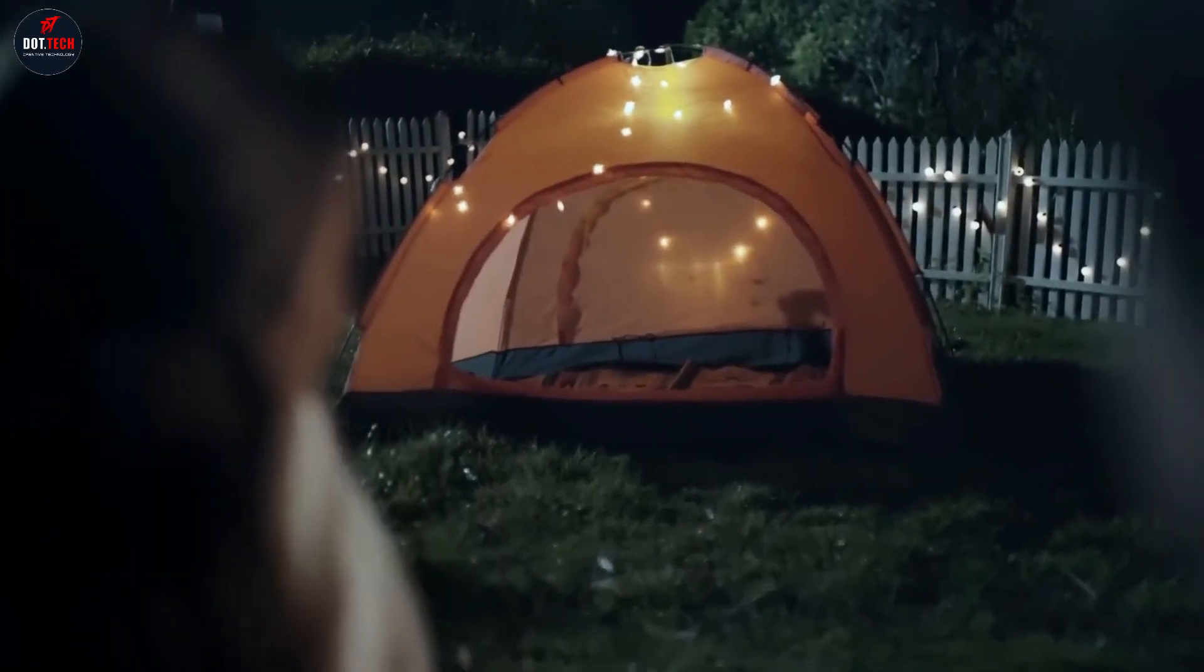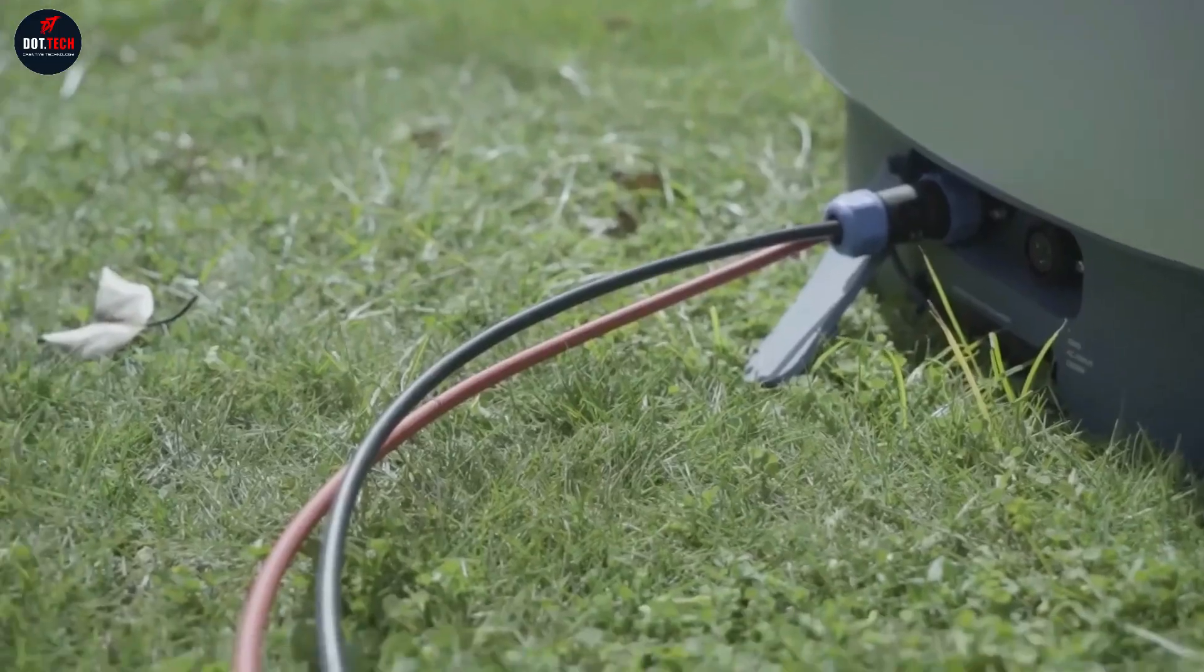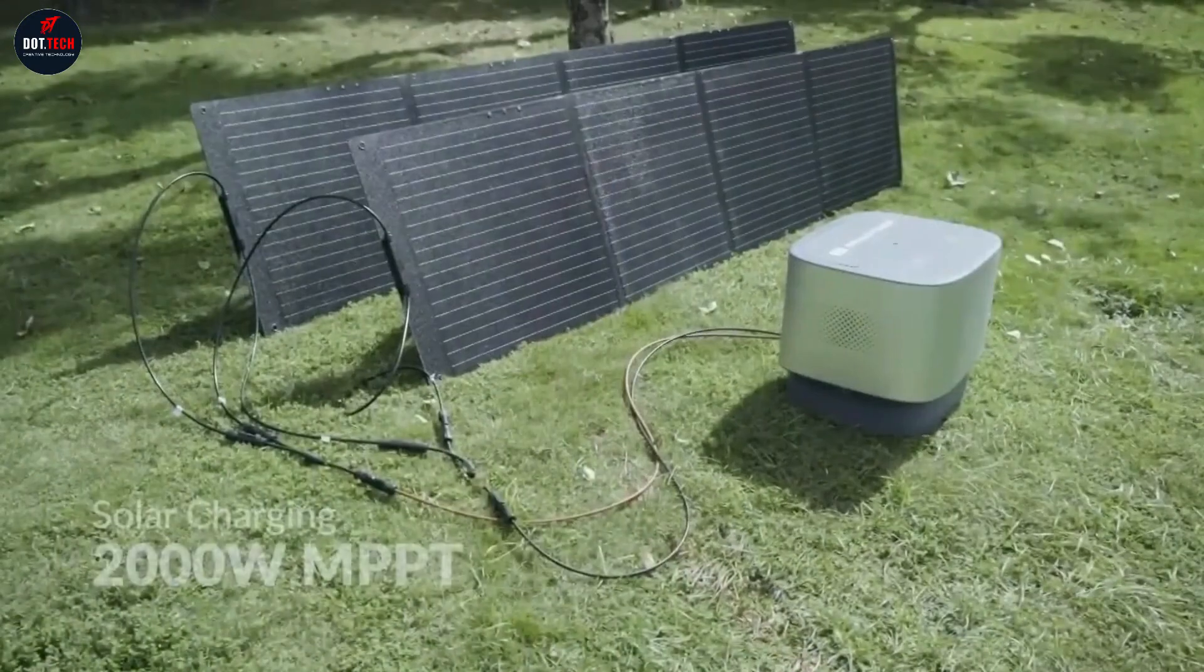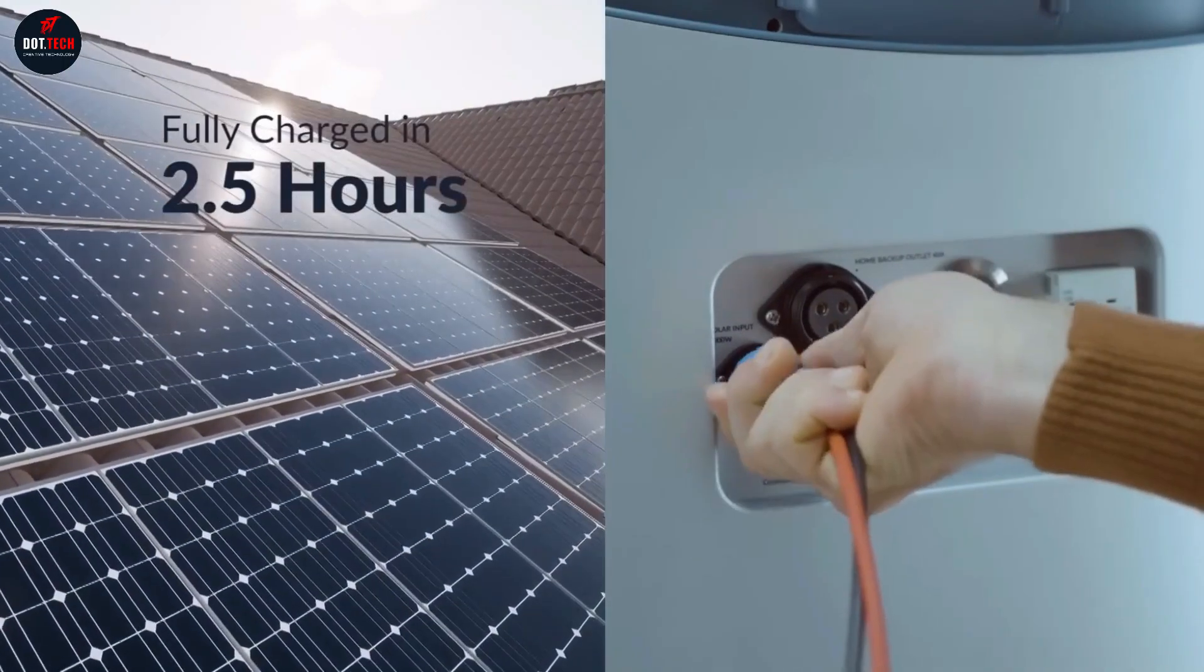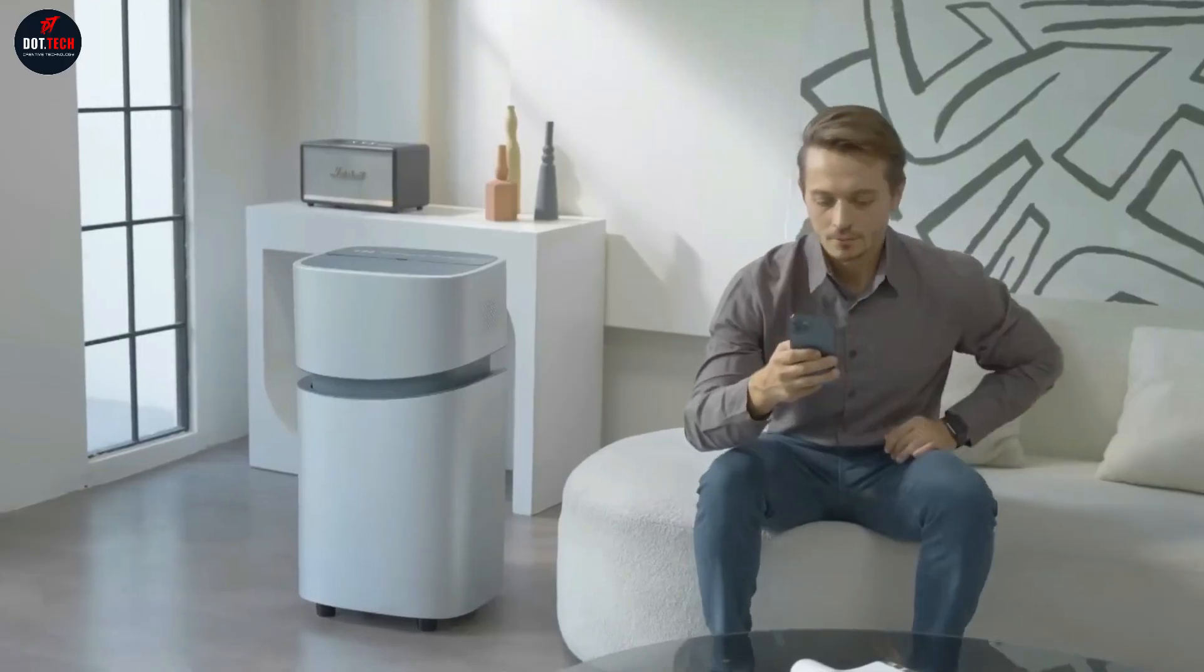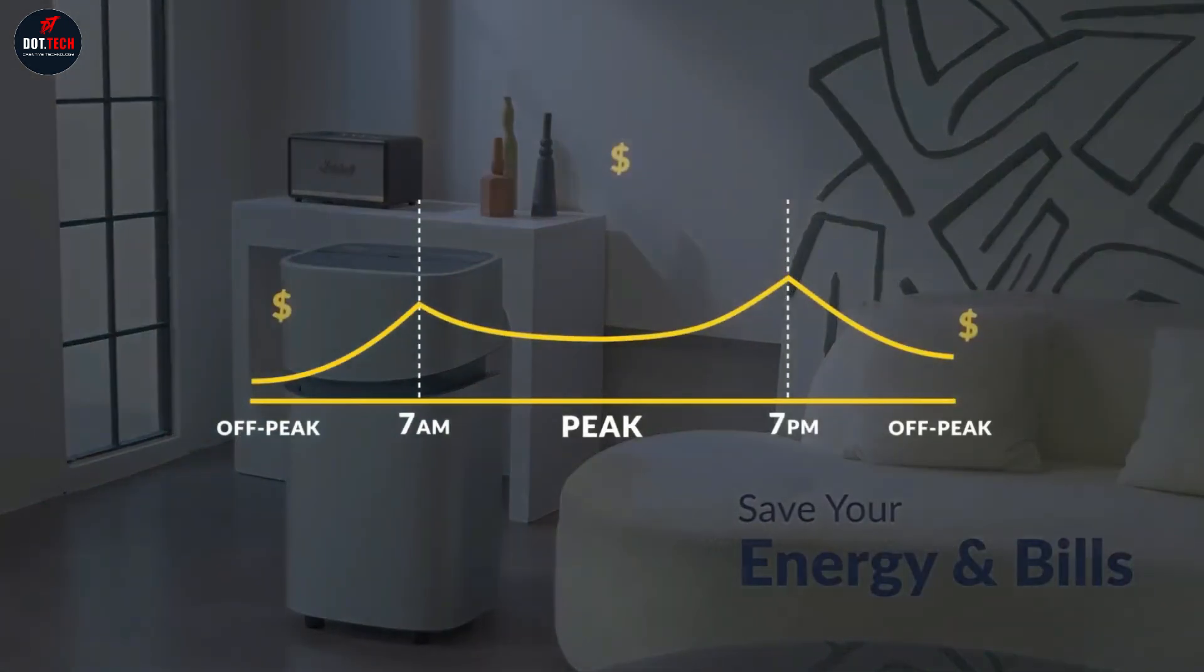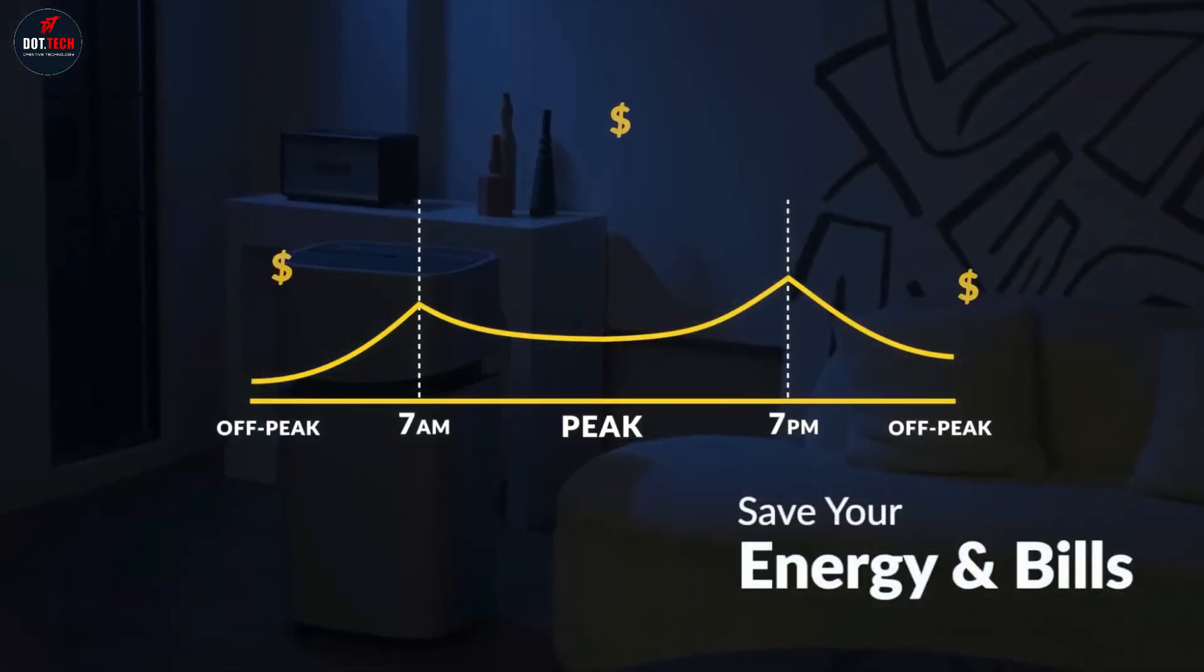The unit features 19 ports, including USB and electric car outlets, catering to diverse needs. Moreover, two wireless panels facilitate smartphone charging, and advanced technology ensures a rapid charge to 100% in just 2.5 hours. This versatile and efficient device is a valuable solution in the face of rising power outage incidents.